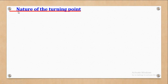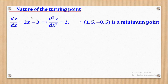Now that I've got the turning point, I have to get the nature of that turning point — is it a maximum point, a minimum point, or a point of inflection? The first step is to get the second derivative. The first derivative was 2x - 3, so the second derivative will be 2. This second derivative is positive, meaning our turning point is a minimum point.